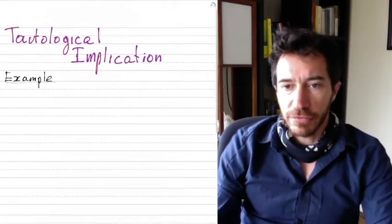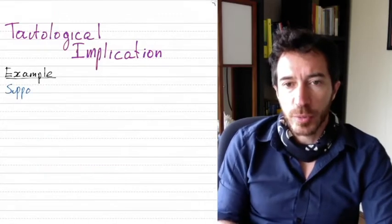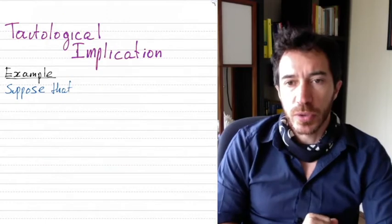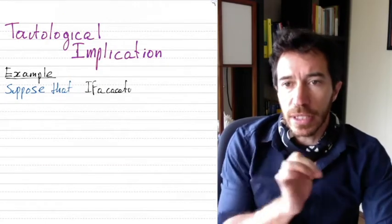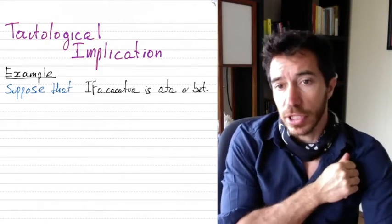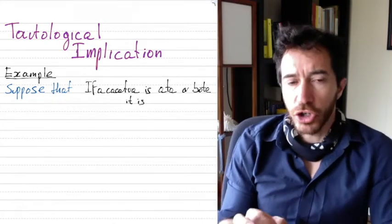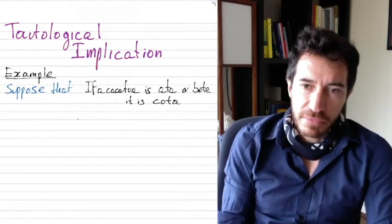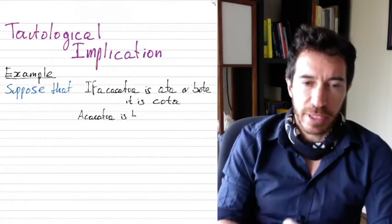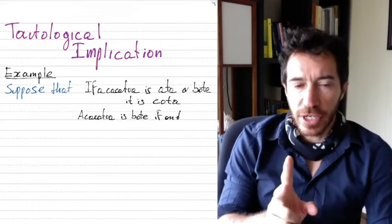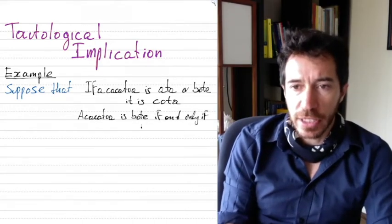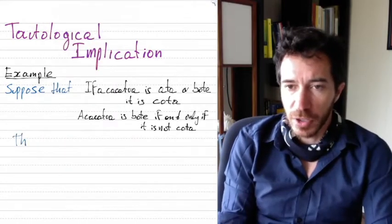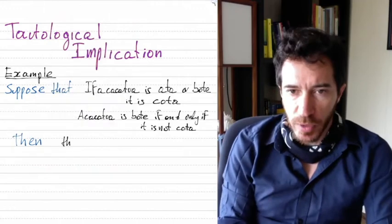Here is a funny example. Suppose the following two things: if a cacatua is ata or bote, it is cota. These are words that are just made up — ata, bote, cota — they don't mean anything, but let's play with it. The second assumption is that if a cacatua is bote if and only if it's not cota.